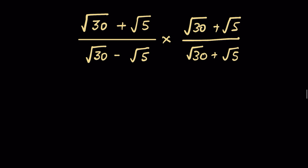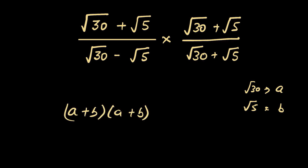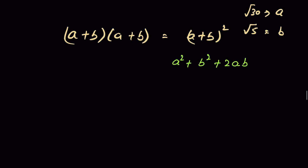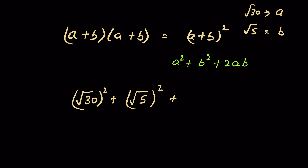Now let √30 = a and √5 = b. The numerator becomes (a + b) × (a + b), which equals (a + b)². We expand this as a² + b² + 2ab, so we write (√30)² + (√5)² + 2 × √30 × √5.